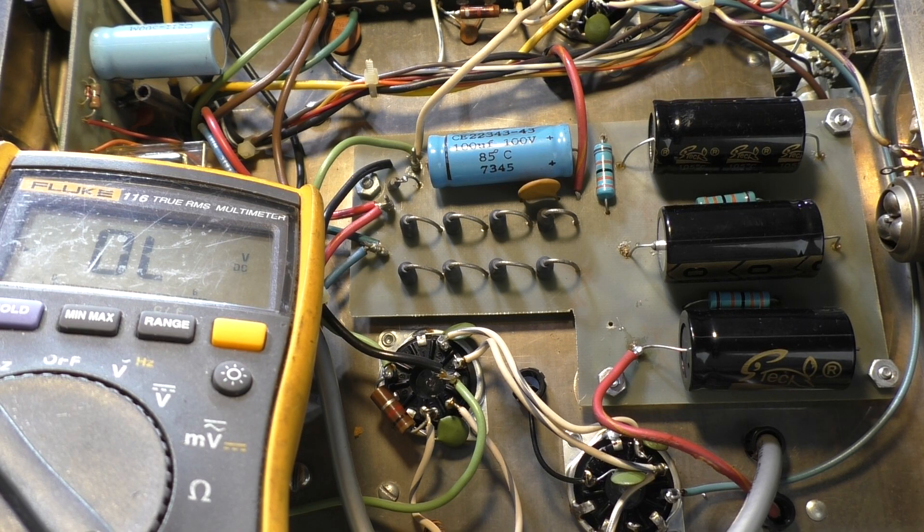Now mind you, some amps have a high voltage turn-on relay so the high voltage is only applied when you key it down. But most grounded grid amplifiers like this one do not have that - they apply the high voltage onto the tube as soon as you fire the amp up.